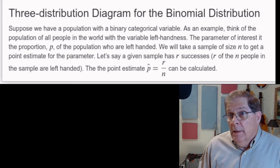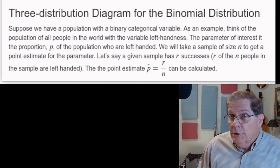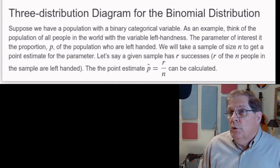As we look at each individual in the population, the thing that varies is whether they're left-handed or not. The parameter of interest then is the proportion of the population who are left-handed.